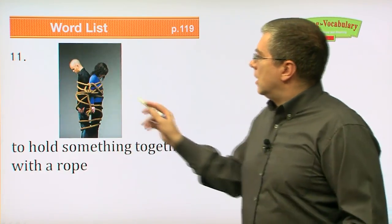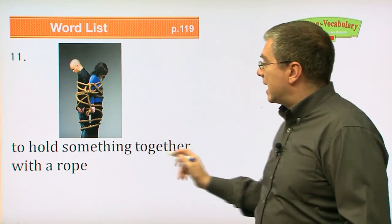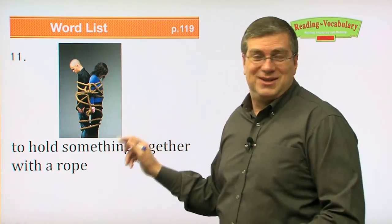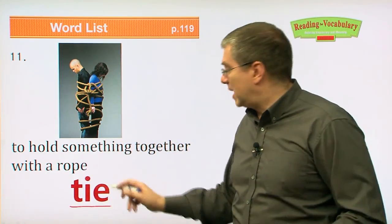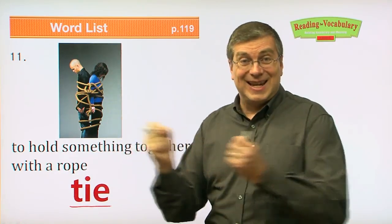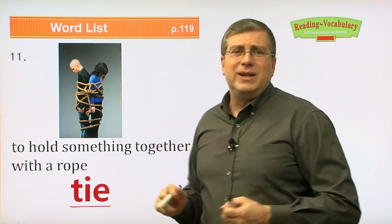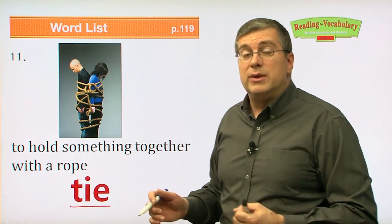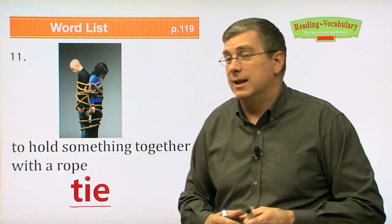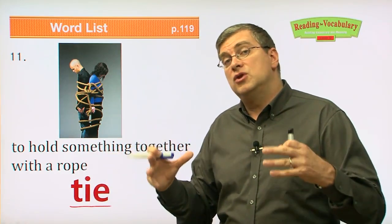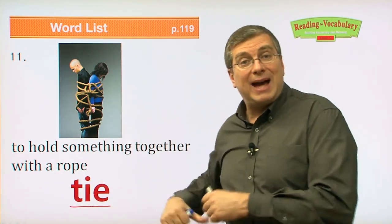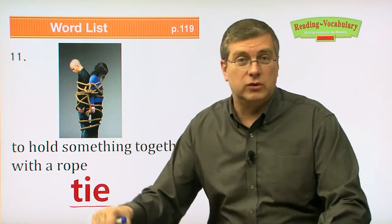Next one: to hold something together with a rope. Usually you hold your shoe together with rope. What this is — is tie. Tie is a verb: to hold something together with a rope. If two people are tied together, they're tied together. Normally we tie things in our life — if you have a shoe with shoelaces, you tie the shoelaces together. Many people do that every day. Also, if you have many things to carry, you could tie your backpack to the back of your bicycle so it doesn't fall off. You can tie many things with rope.